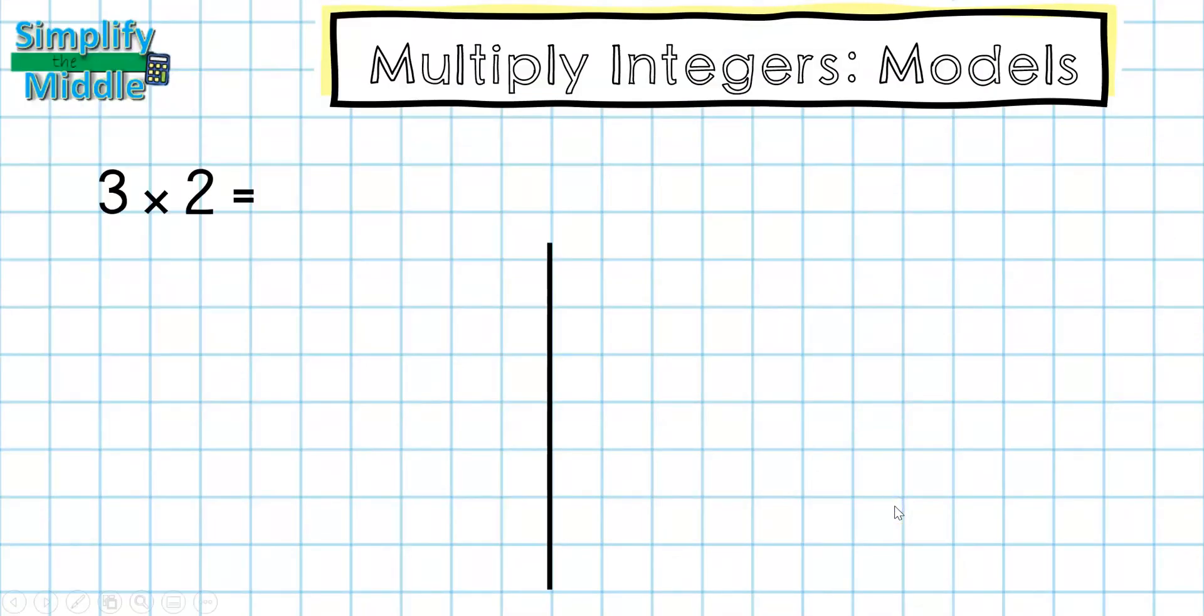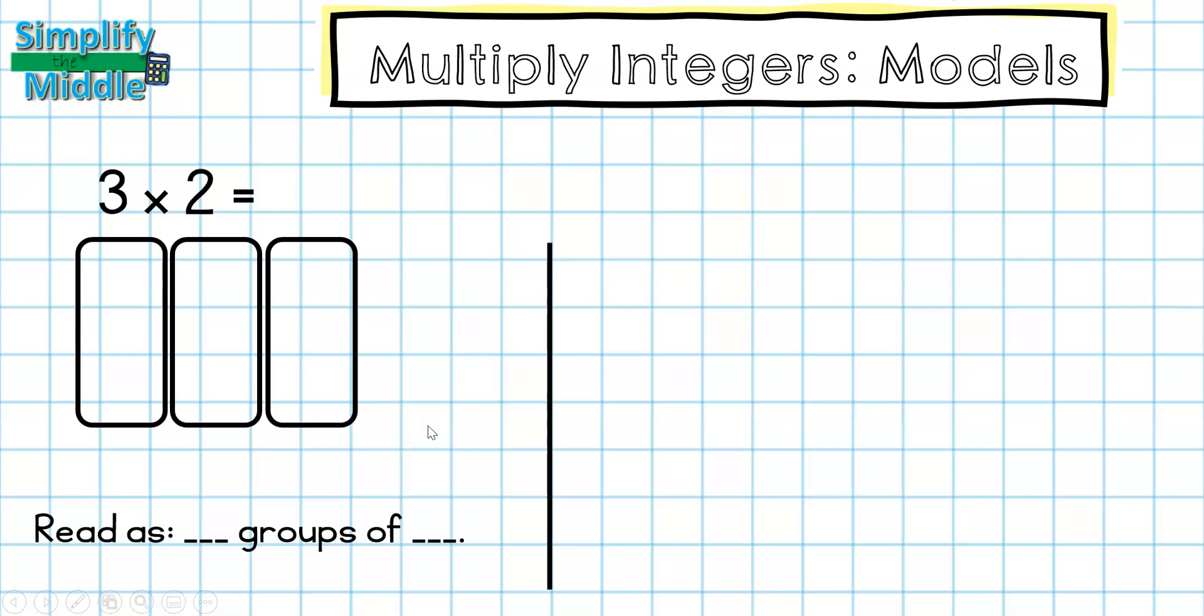So in our problem, 3 times 2, we're going to use counters to represent our sets that we have here. We're going to read it as three groups of 2. So I'm going to create three different groups, and inside each group, I'm going to be putting a positive 2, which means I'll put two yellow counters. So I'll do that for each of my groups, and then I'll count up what I have. These are all yellow, and I have 6, so my answer is positive 6.